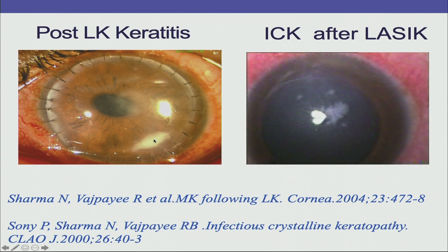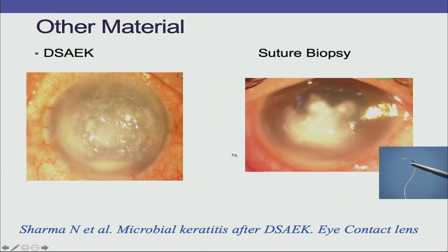For interface infections, you need to remove the sutures and send a scrape. For infectious crystalline keratopathy after LASIK, you need to elevate the flap and take a scrape. For infections after DSAEK, you may need intravitreal scissors to take a biopsy from the posterior lenticule. For corneal abscess with no epithelial defect, a short suture biopsy can be done — passing a needle with a very short suture through the abscess and sending it for culture and sensitivity.